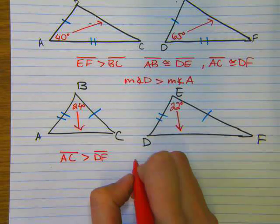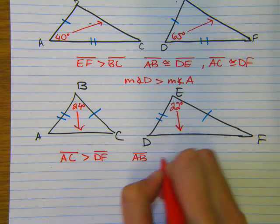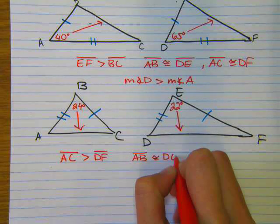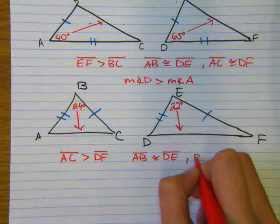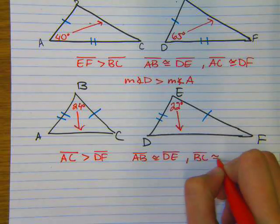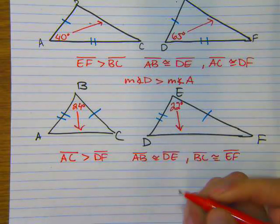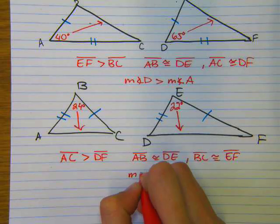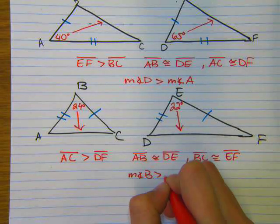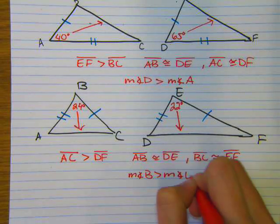And again, we know this because of our congruent sides. So AB is congruent to DE, and BC we said was congruent to EF. But the most important piece is that the measure of angle B is greater than the measure of angle E.